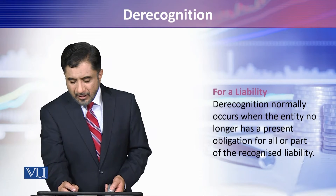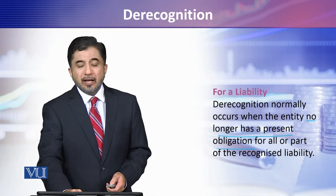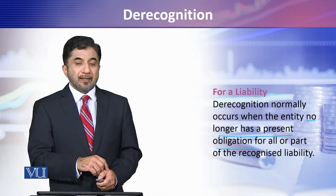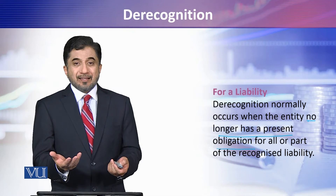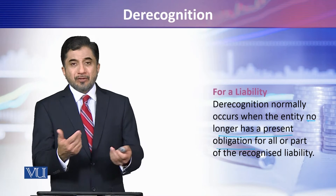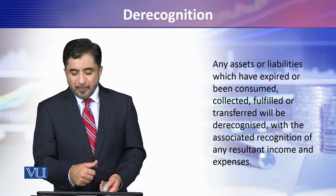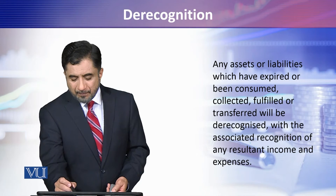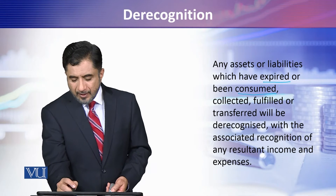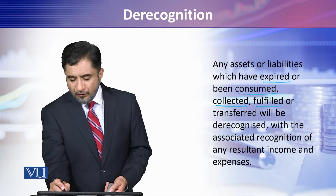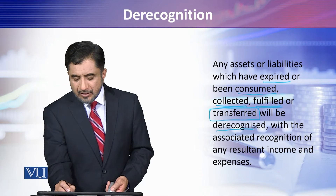De-recognition of a liability normally occurs when the entity no longer has a present obligation for any or part of the recognized liability. For example, you paid off the liability so you have no more obligation, or you got the liability waived or received a discount, so you no longer have any obligation. Any asset or liability which has expired, been consumed, collected, or fulfilled and transferred is subject to de-recognition.